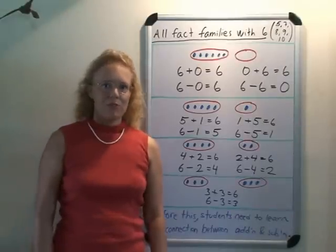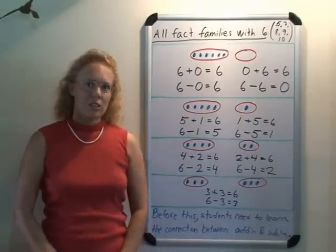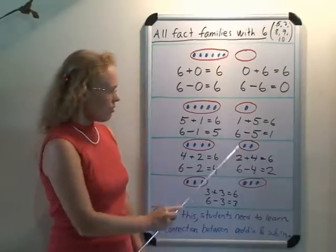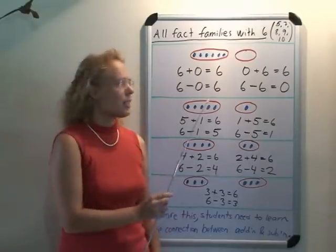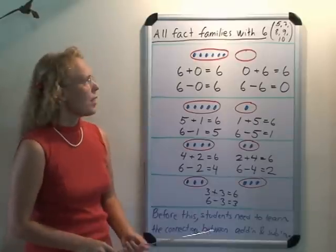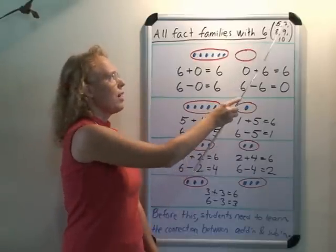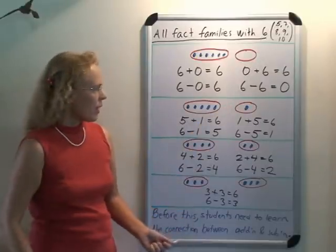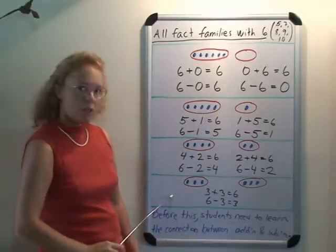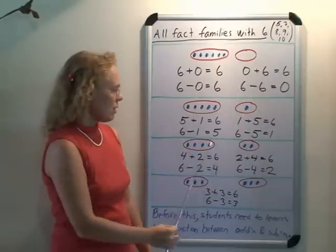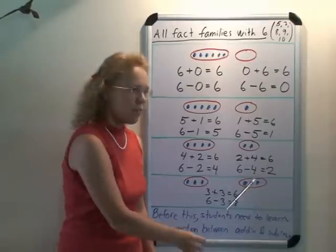Next we come to fact families, and they are a natural extension of what we just looked at previously. Here I have all fact families associated with six, where the sum is six, and of course you should have children study fact families with five, seven, eight, nine, ten also. And we got four different fact families, either six and zero are the numbers used, or five and one, or four and two, and then three and three.